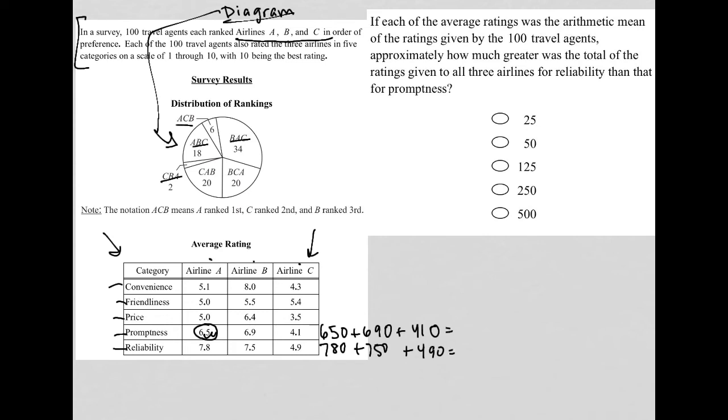So all that's left for us to do is to add these values up. So I have 650 plus 690 plus 410, and I get 1,750.